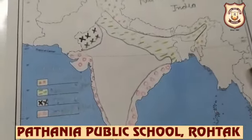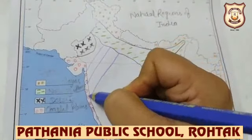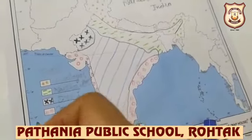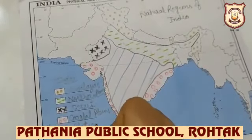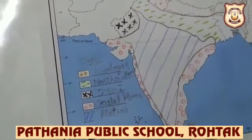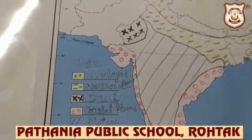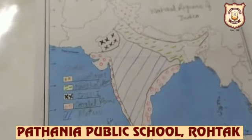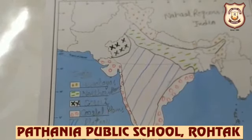Next is the plateau region. We will show this using blue slanting lines. We'll make one more box in the index and write 'Plateau.' Wherever you see blue slanting lines on the map, it means you are showing the plateau. Wherever you see black cross marks, it means the desert. This is the complete map of natural regions of India. Children, draw it carefully and use colors accordingly. Have a wonderful time!